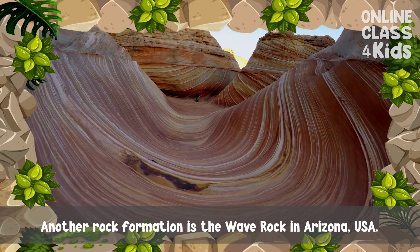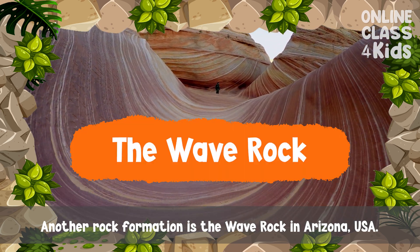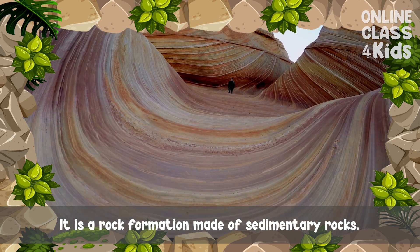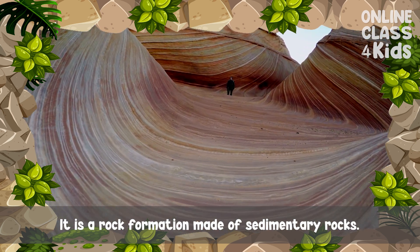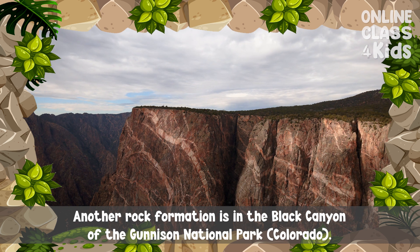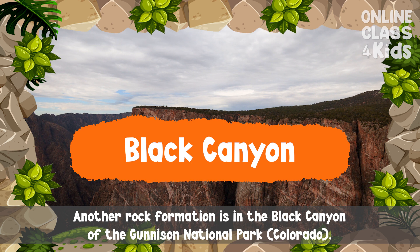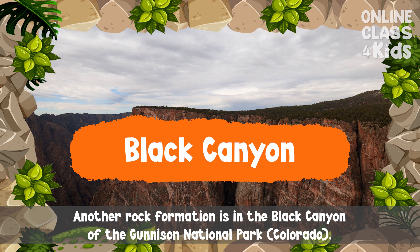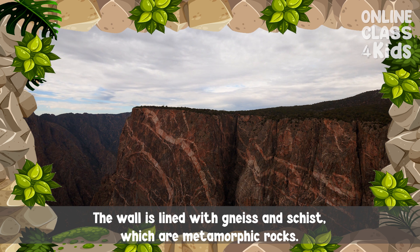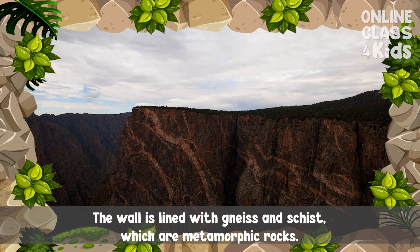Another rock formation is the Wave Rock in Arizona, USA. It is a rock formation made of sedimentary rocks. Another rock formation is in the Black Canyon of the Gunnison National Park in Colorado. The wall is lined with gneiss and schist, which are metamorphic rocks.